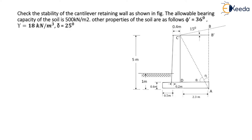The surcharge angle i is 15 degrees, meaning the angle made by the surface of the backfill with the horizontal surface is 15 degrees. Now let us assume that Rankine's theory is applicable for this retaining wall. So the Rankine pressure PA is acting on the vertical line AB, which passes through heel point A, and active pressure PA is acting along this line.